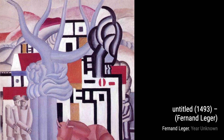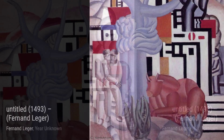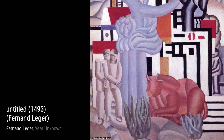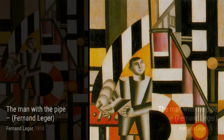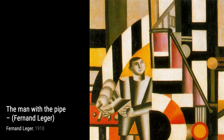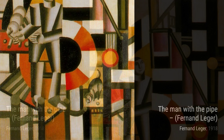Now let's take a look at Untitled, 1493. This artwork is a testament to Léger's mastery of form and composition. The overlapping shapes and bold colors create a sense of movement and depth. In The Man with the Pipe, Léger captures the essence of the modern man. The strong lines and simplified forms give this painting a sense of strength and masculinity.